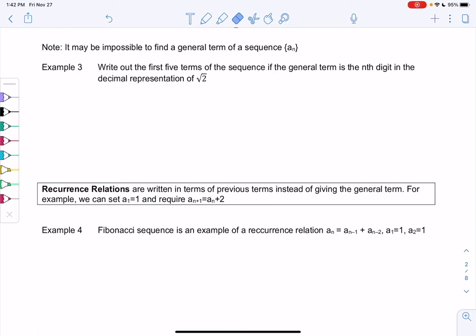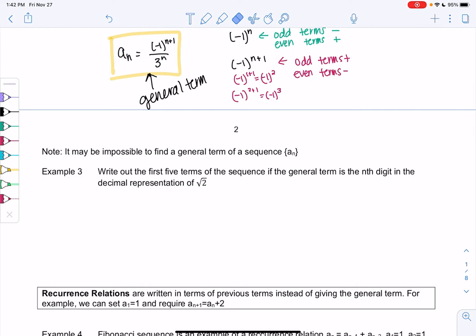Section 10.1, example 3. It may be impossible to find the general term of a sequence a_n. So in the previous example, we found that formula for the general term. We will not always be able to do that.